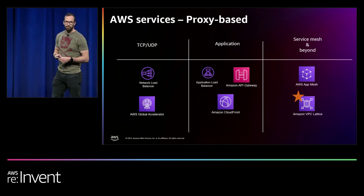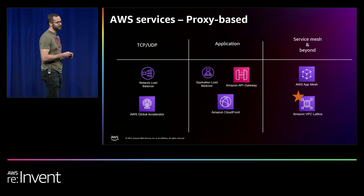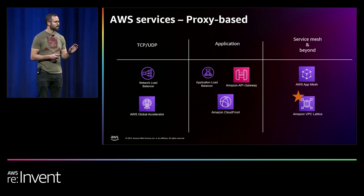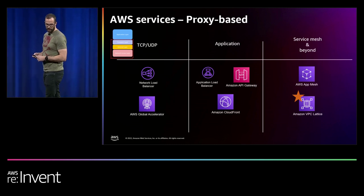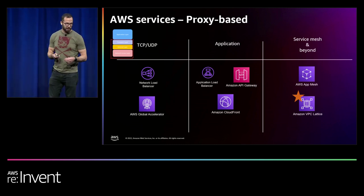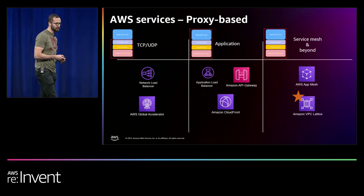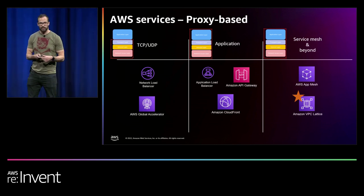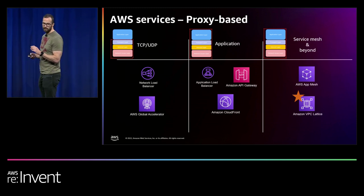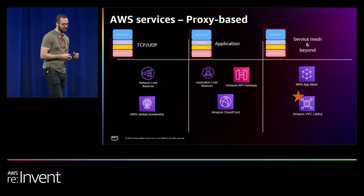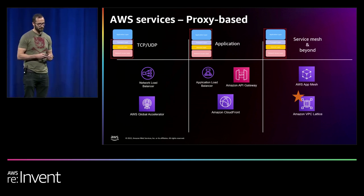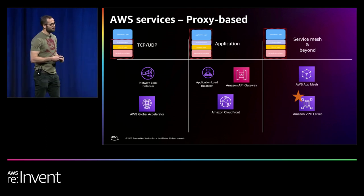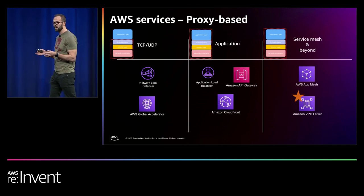Looking at our AWS services through a proxy-based lens, we have a structure with different types of services operating at different levels of the TCP/IP layer. Services like Network Load Balancer and Global Accelerator sit in the transport layer, focusing on TCP/UDP. Services operating at the application layer include Application Load Balancer, API Gateway, and CloudFront. Finally, we have services that also live in the application space but aren't really load balancers or reverse proxies — examples being AWS App Mesh and Amazon VPC Lattice, which was launched this week. We'll give a high-level overview of each.